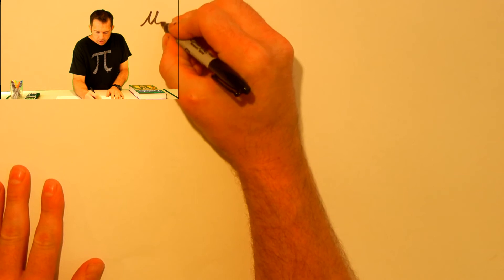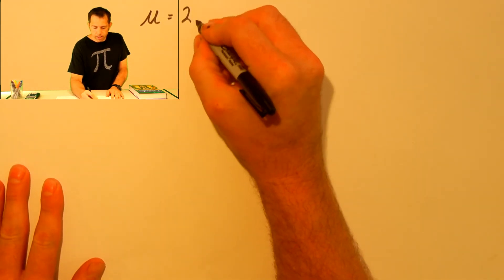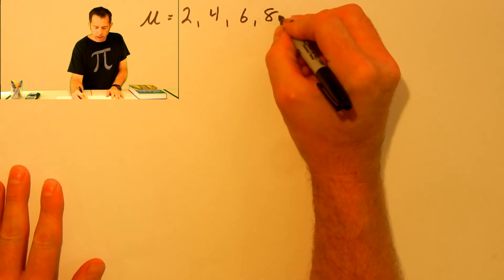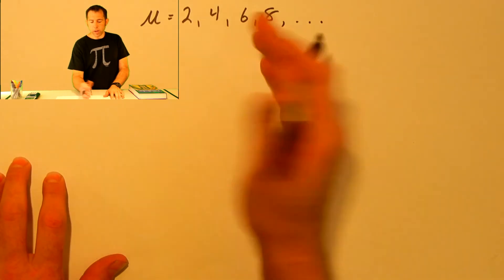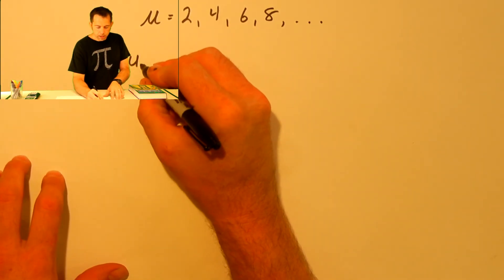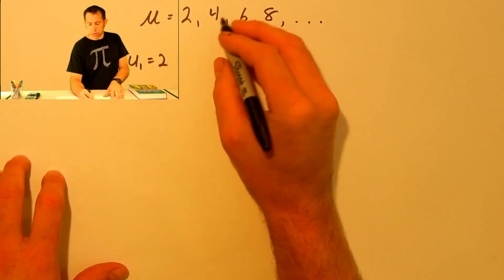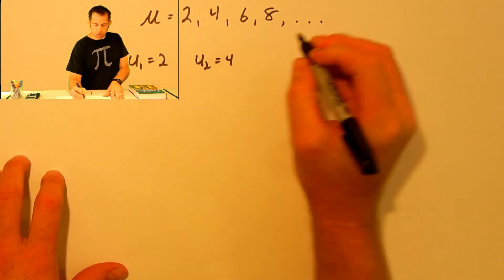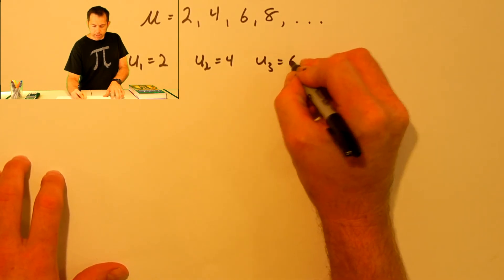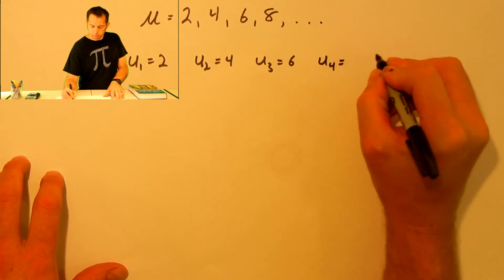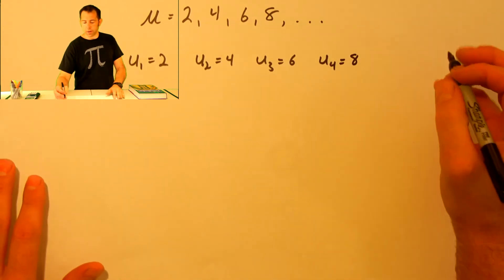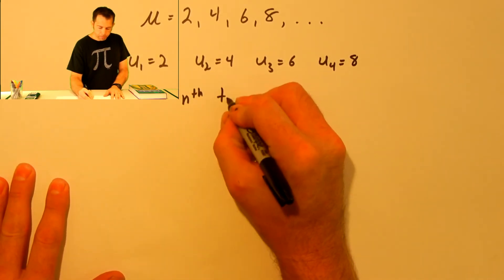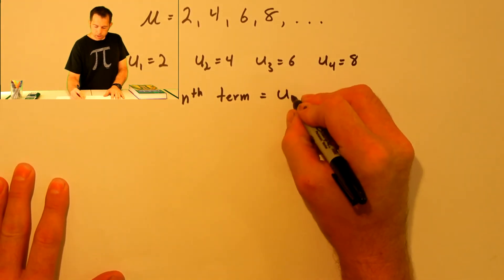If we use the letter U to represent the sequence 2, 4, 6, 8, and so on, then the first number in that sequence we call U sub 1, so U sub 1 would be 2. The second term, U sub 2, is 4. The third term, U sub 3, is 6. And the fourth term, U sub 4, is 8. Since that sequence goes on forever, there's an infinite number of terms, and the nth term we call U sub n.